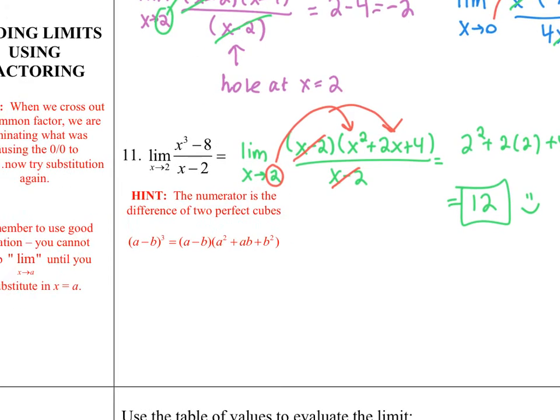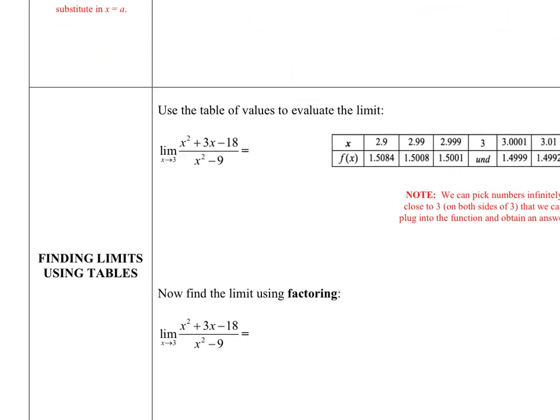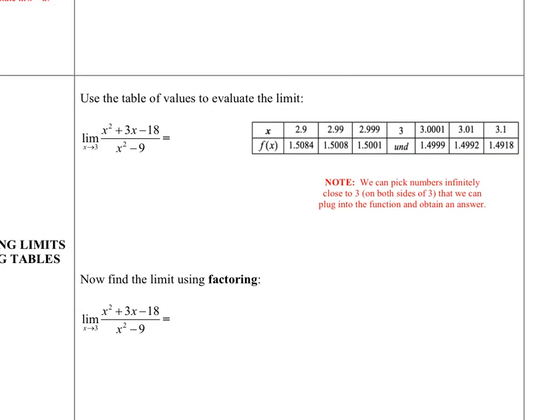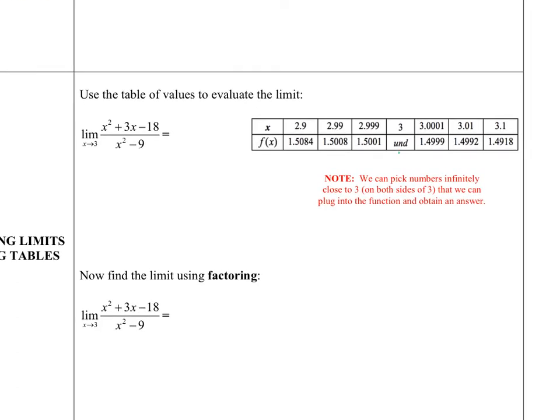The last method we're going to look at today is how to use a table of values to evaluate a limit. So I'm given this limit here. And if I do a direct substitution, and I plug in the x equals 3, we can see in this table, that's going to give us the 0 over 0. So this generates that 0 over 0. But that is the only off-limits value. I can pick something closer and closer and closer to 3, and I can plug it into my function, and I can actually get a value.